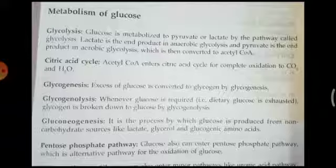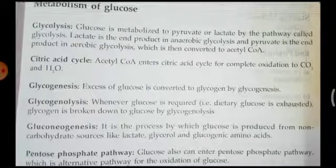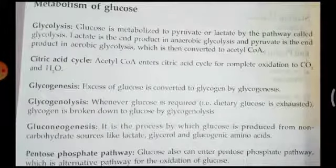In carbohydrate metabolism, let us see how many types of metabolism there are and what cycles or pathways we are going to discuss. The first important metabolic pathway is glycolysis. The name itself indicates: glyco means glucose and lysis means breakdown. Glucose is metabolized to pyruvate or lactate by the pathway called glycolysis.